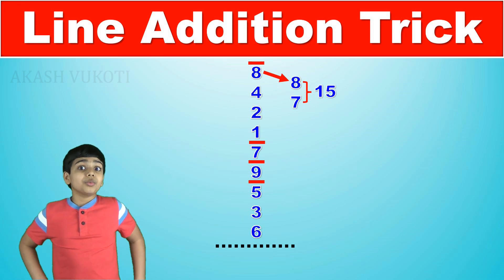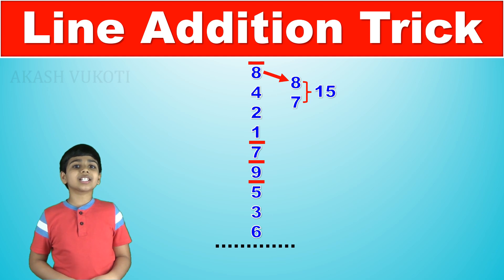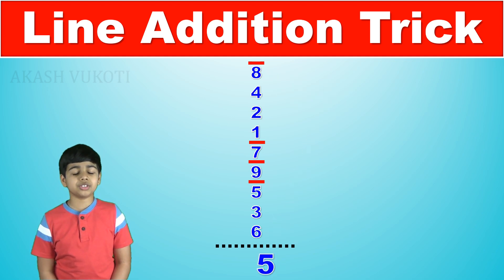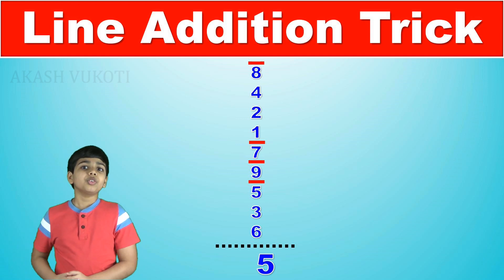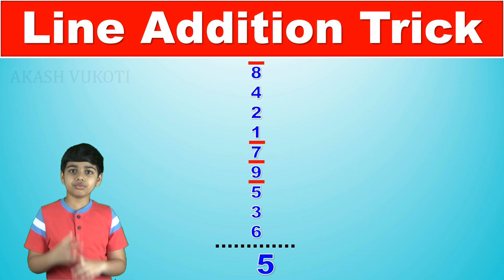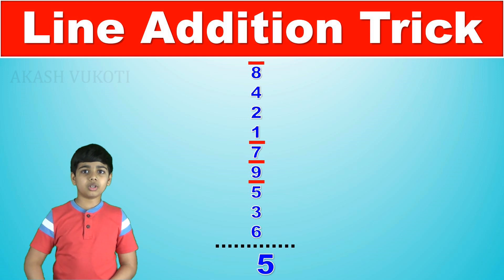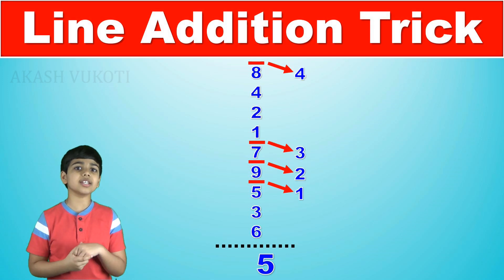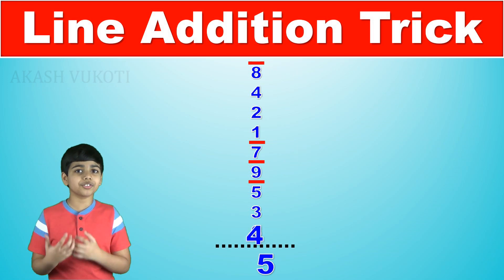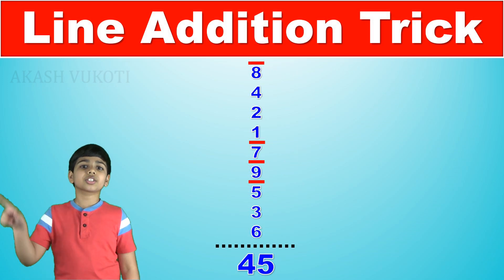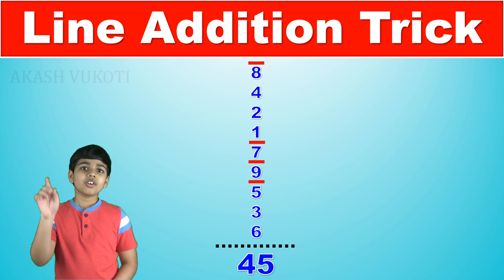And since we are left with 5, 5 is the last digit of our answer. So we write that down. Finally, we count the lines that were drawn quickly. So there are 1, 2, 3, 4 lines there which means that 4 is the first digit of the final answer which means that the correct answer is 45.